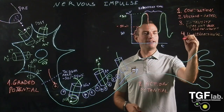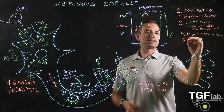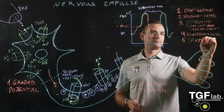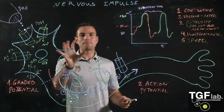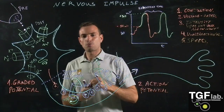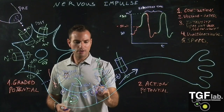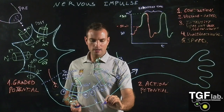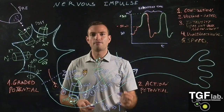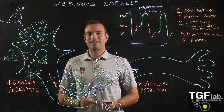The final characteristic of the action potential is speed. The speed can be regulated, and there are two ways of regulating it. The first way is through the diameter of the axon — a larger axonal diameter means greater speed of the message. The second mechanism is myelination, or myelin sheaths.